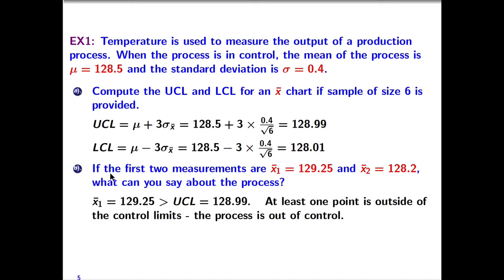Part b: If the first two measurements are X-bar1 = 129.25 and X-bar2 = 128.2, what can you say about the process? X-bar1 = 129.25 is above the UCL of 128.99, so at least one point is outside the control limits — the process is out of control.